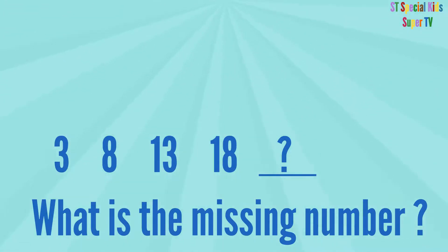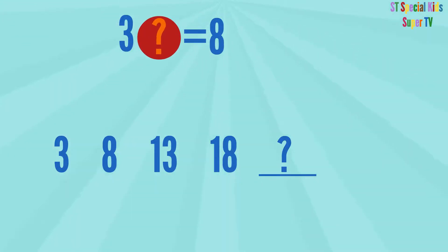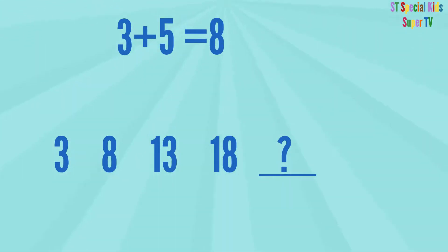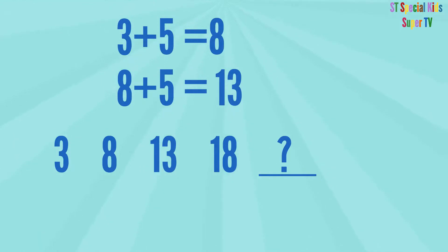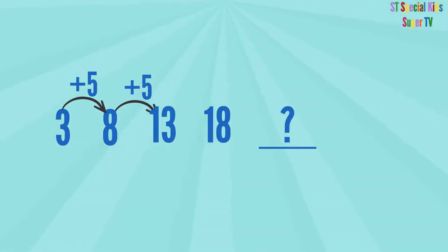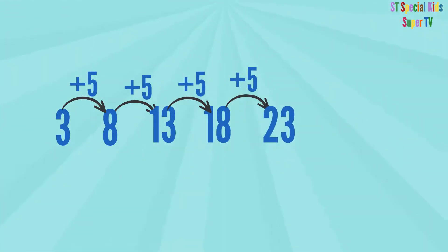Let's solve this pattern — what is the missing number? What will you do with 3 to have 8? Adding 5 to 3 gives 8. And 8 plus 5 gives 13. So: 3 plus 5 equals 8, 8 plus 5 equals 13, 13 plus 5 equals 18. So what is 18 plus 5? Our missing number is 23.